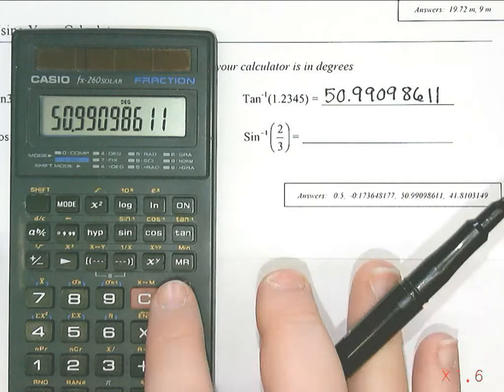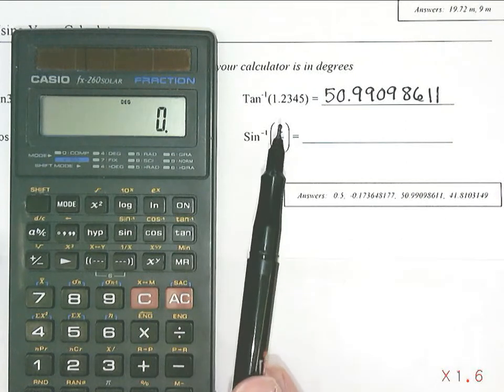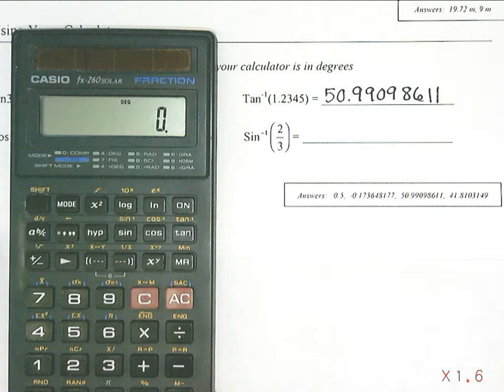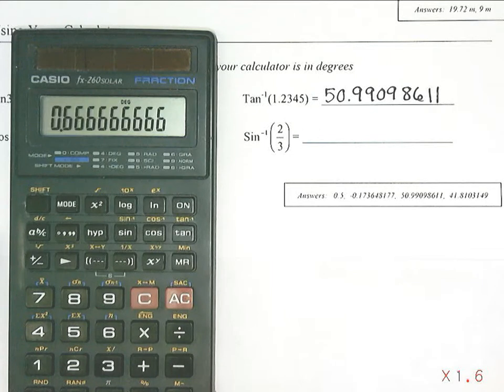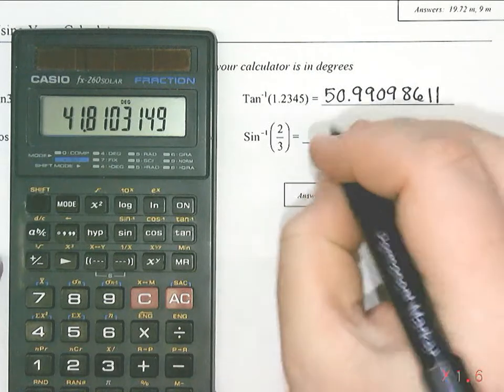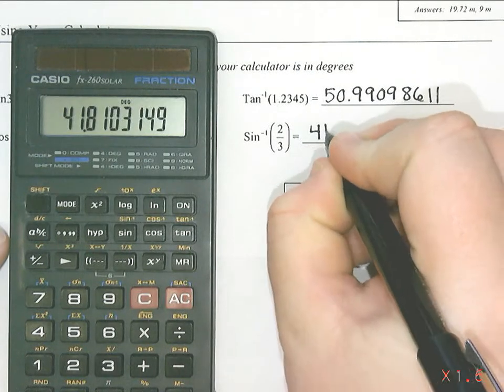To try the next one, I notice that it's a fraction. So the first thing I need to do is punch in 2 divided by 3 into the calculator. So 2 divided by 3, and then really important that we hit equals before we do shift and sine. If you do not press equals, you will not get the correct answer.